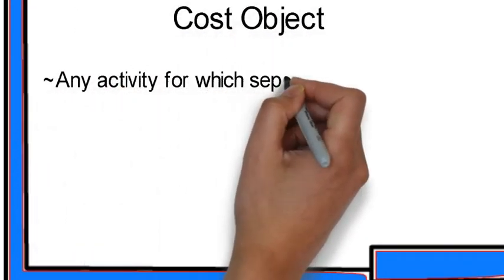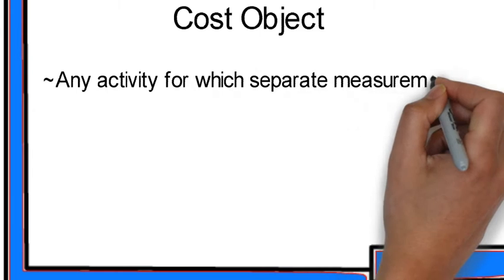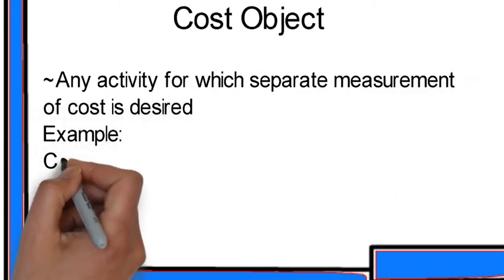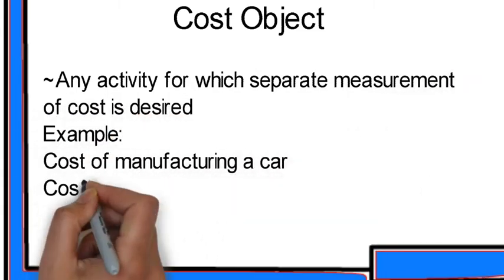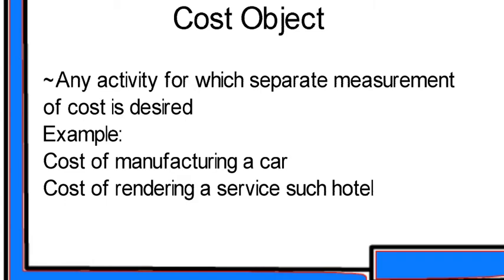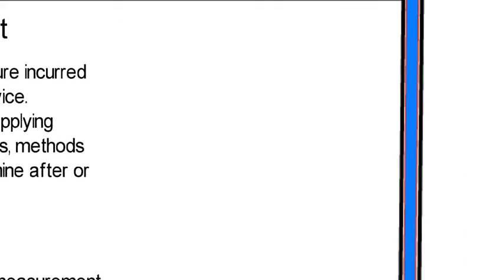What is a cost object? A cost object is defined as any activity for which a separate measurement of cost is desired. For example, the cost of manufacturing a car, or the cost of rendering a service such as a hotel.